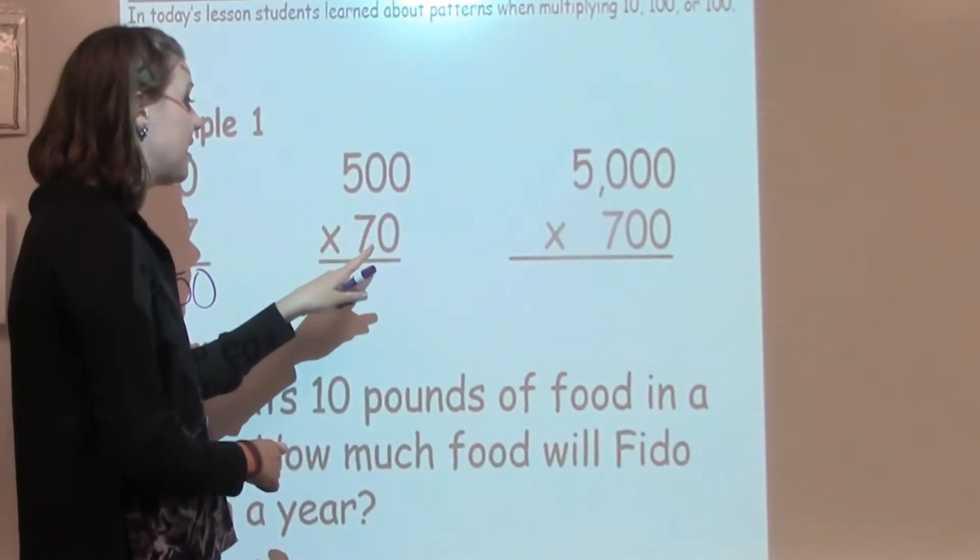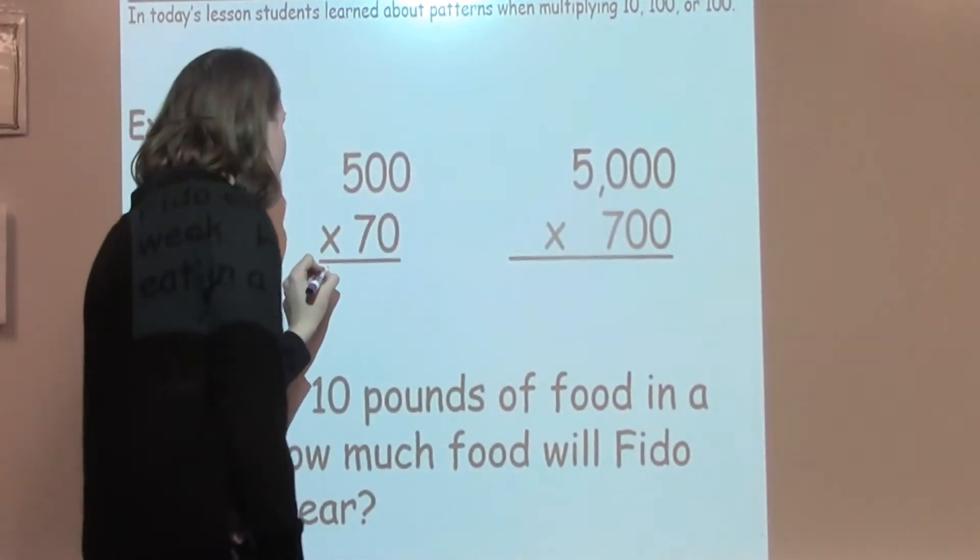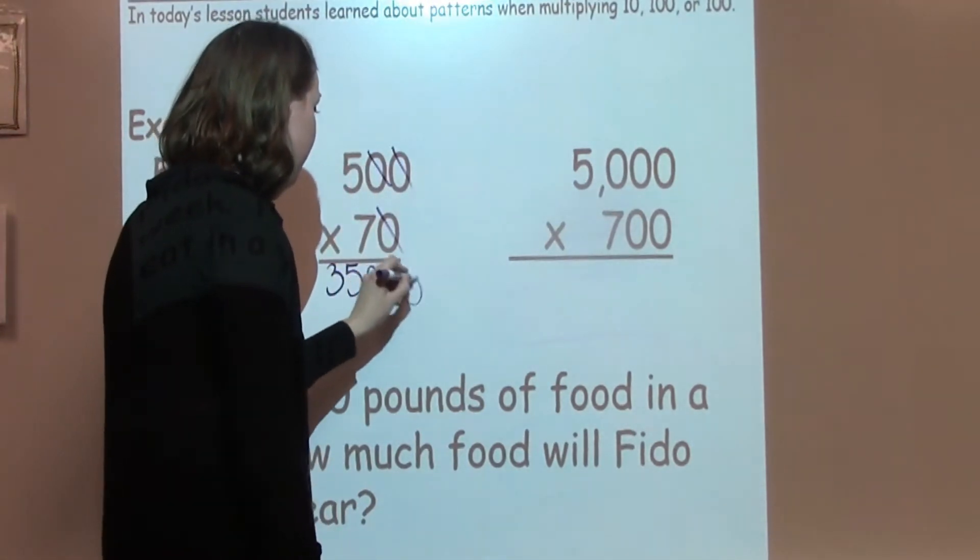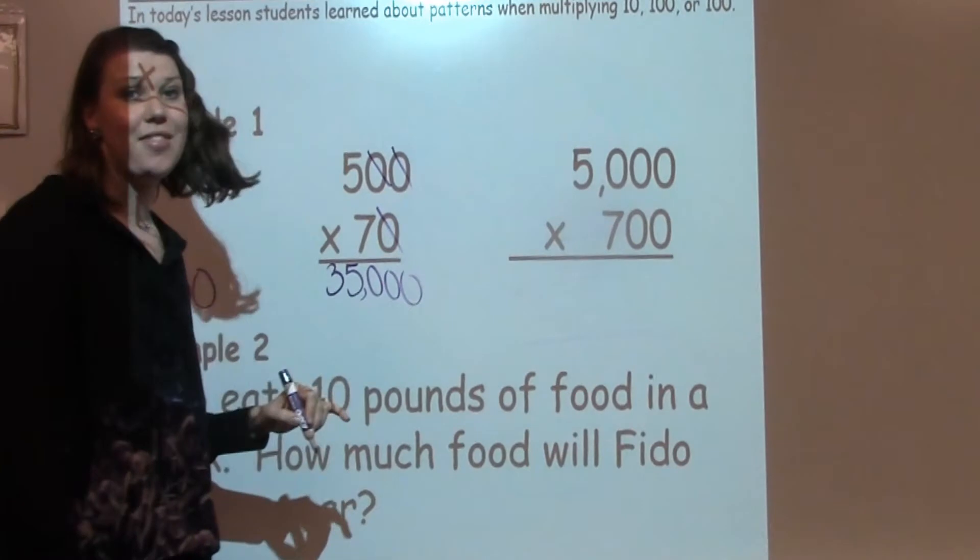Again, I have 500 times 70. So I know 5 times 7 is 35. I have 1, 2, 3 0s. I just add those 3 0s on the end. And I have 35,000.